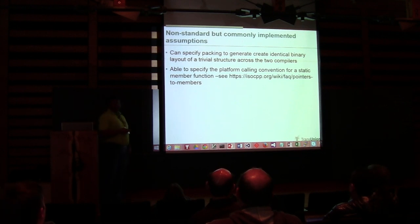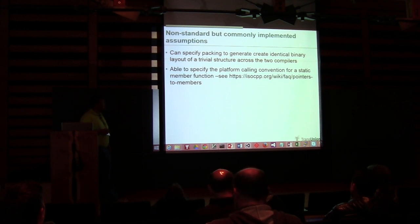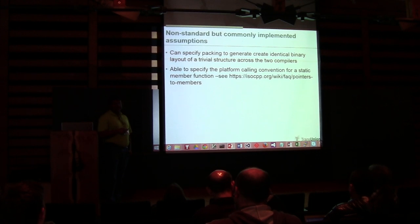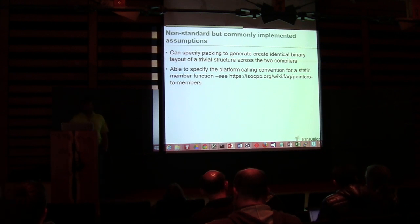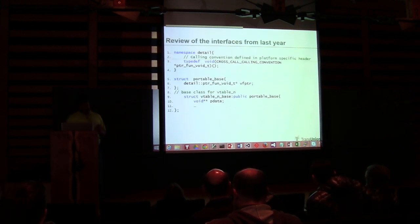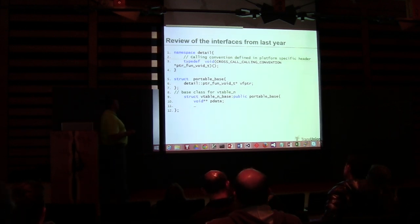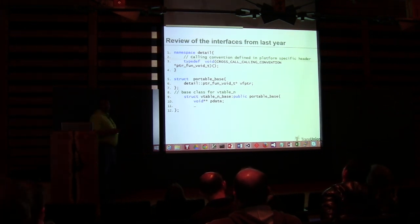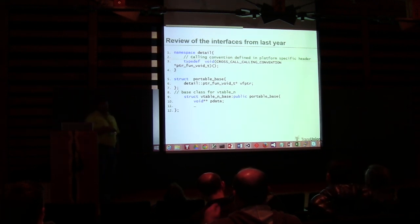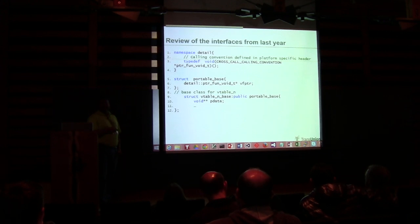Theoretically a C extern-C function and a static member function can have different calling conventions, but the compilers currently out there support a way to either make them the same or they make them the same by default. So basically we're going to talk about the cross-compiler stuff. When I say cross-compiler interface, I'm talking about the lower-level, bit-level thing. When I say CPP component interface, I'm talking about the high-level thing we defined.